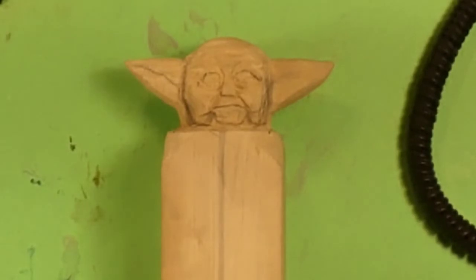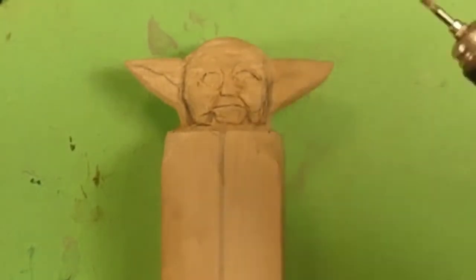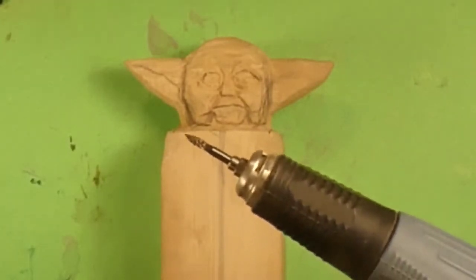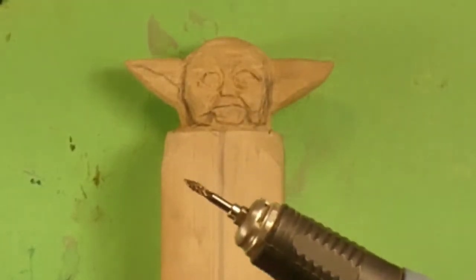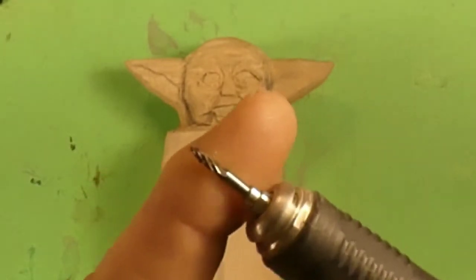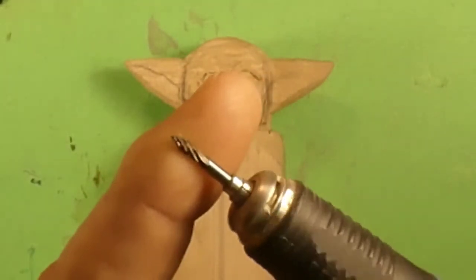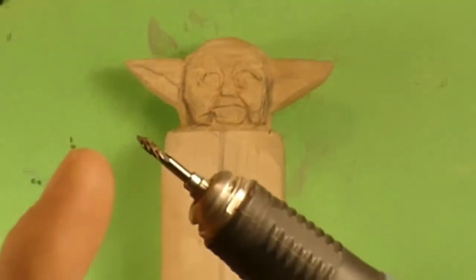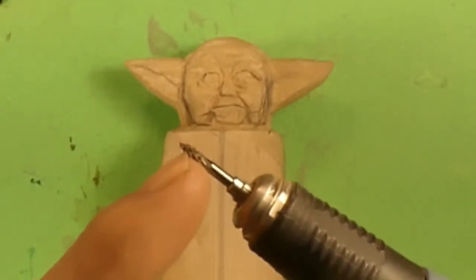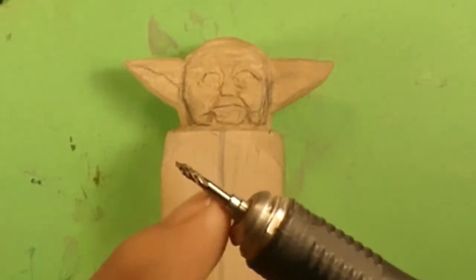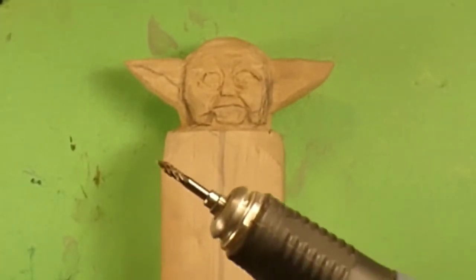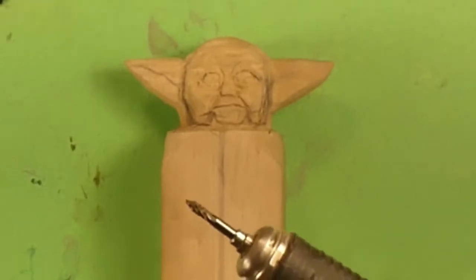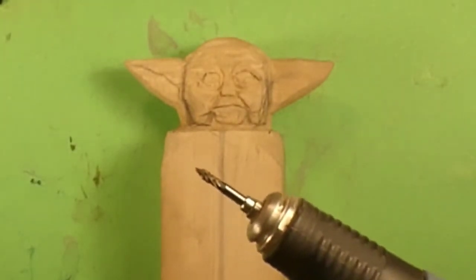We're gonna be using the microcarver here with a carbide flame burr. This carbide flame burr came from eBay, made in the USA, like 12 bucks for this burr. Let's go ahead and fire everything up and get ready to do the voiceover.